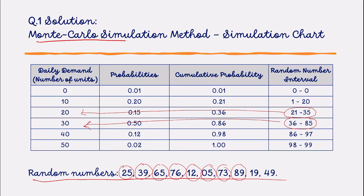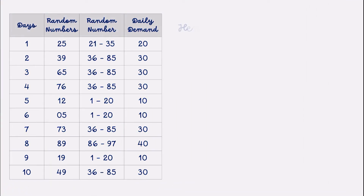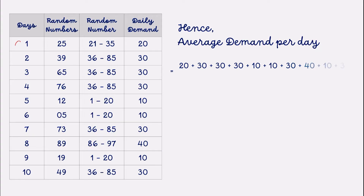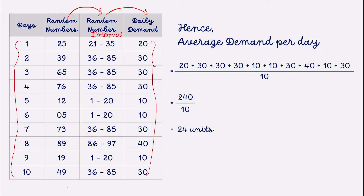We are asked to simulate the demand for the next 10 days. We made a chart with the first column for days 1 through 10, the random numbers as written in the question, the random number intervals, and the associated daily demand. To find the daily demand, compare the random number with the interval column in the simulation chart. This gives us the simulated demand for each of the next 10 days.